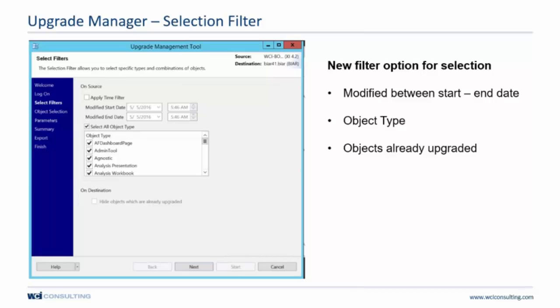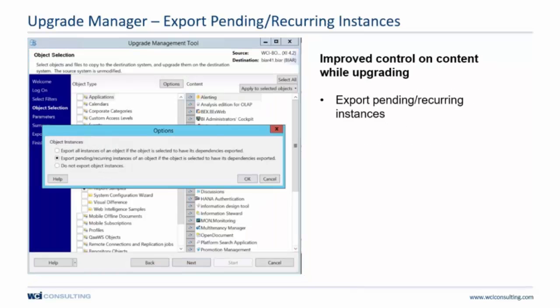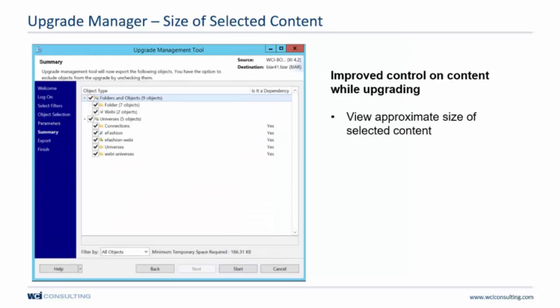Here you can improve control on content while upgrading. You can export the pending and recurring instances of an object if the objects are selected to have their dependencies exported. And here you can actually view the approximate size of the selected content at the bottom — it's showing roughly 186 kilobytes. That's just some of the new features of the upgrade management tool, which have become quite handy.